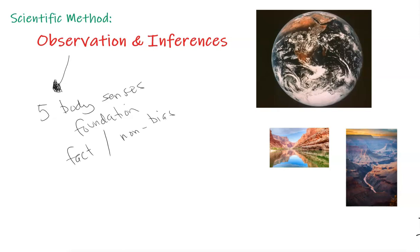An inference, in contrast, is what the person or what you think about the observation. So the observation is your foundation, is what you would base on. And then the inference, or what you infer, comes from the observation.